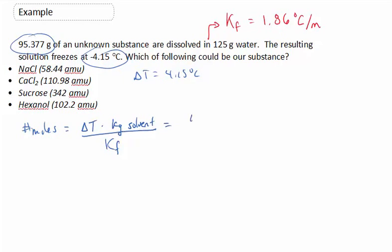So we put in our values, 4.15 degrees C times our kilogram of our solvent, which is 0.125 kilograms. We divide by the 1.86. And I obtain 0.2789 moles of this substance.